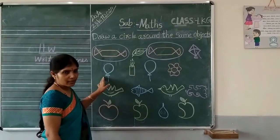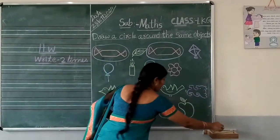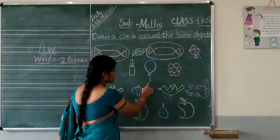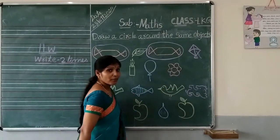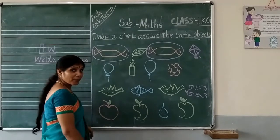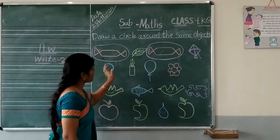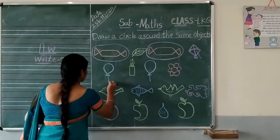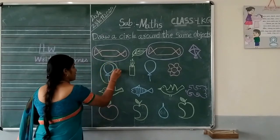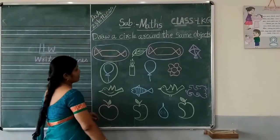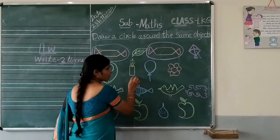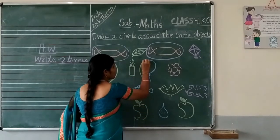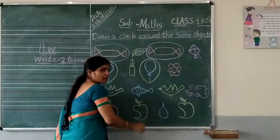See children, how many chocolates are there? Is this mine? Yes, here two chocolates we have. Then what we should do? We should circle around the same objects. Come on children, let's circle around the same objects. Here, which objects are same? Yes, chocolates. Here we have two chocolates. Come on children, let's circle around the same objects.